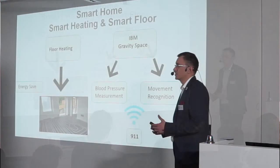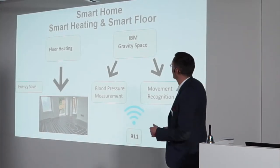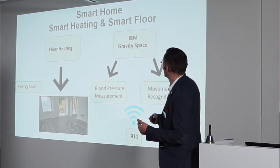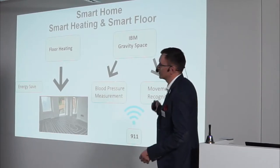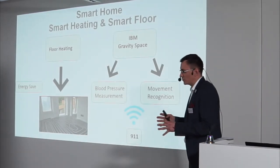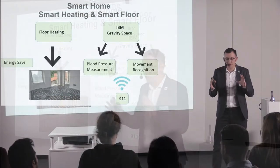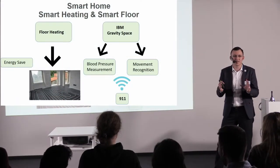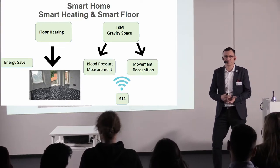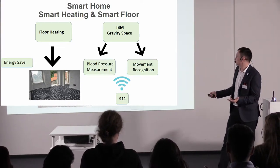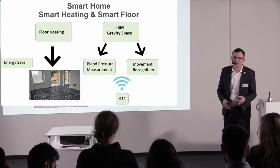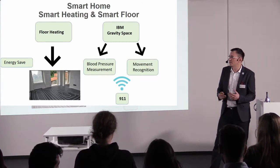From the other side, we have sensors — sensors of movement and blood pressure. IBM created a very interesting system called Gravity Space. From one side, it can recognize our movement inside a room, create a picture of everyday movement and predict what we are doing. For example, if we are falling and we're not getting up, something happened — it can send a message to emergency services. It can also measure blood pressure when we're standing barefoot and can predict some heart diseases.